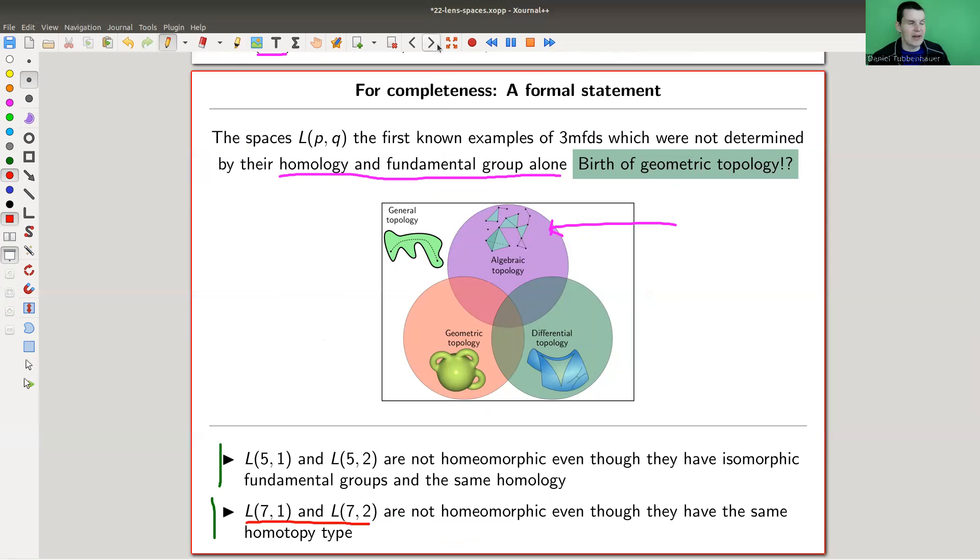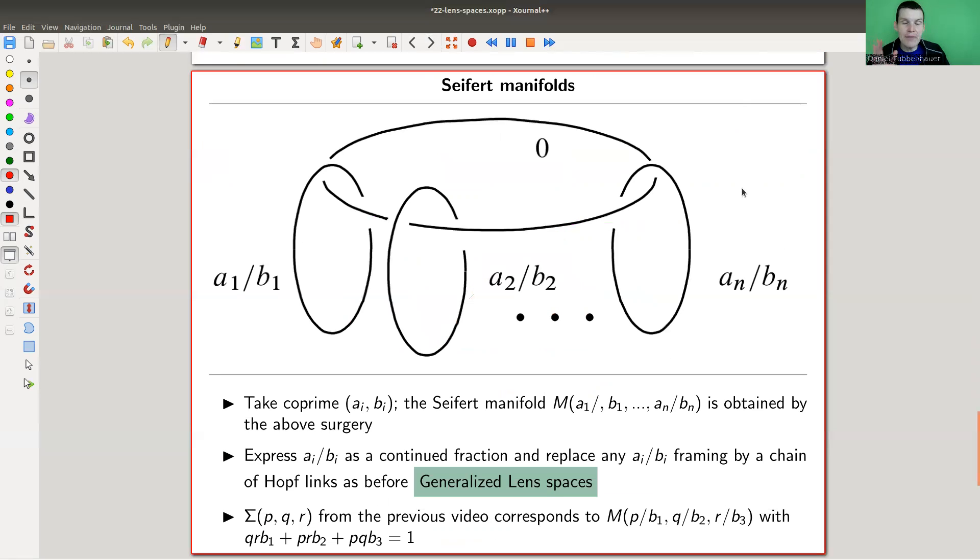Seifert manifolds I mentioned in the last video are a generalization of lens spaces. They're generalized lens spaces. We have the continued fraction expression now for a bunch of those, a1, b1 to an, bn. The framing is given in the very same way by constructing those continued fractions and doing surgery around a certain type of Hopf link configuration as demonstrated here.